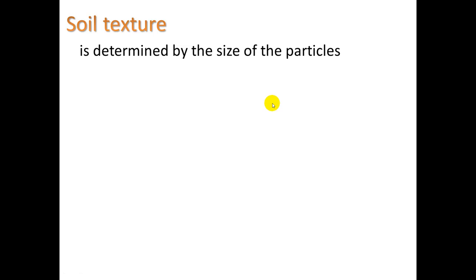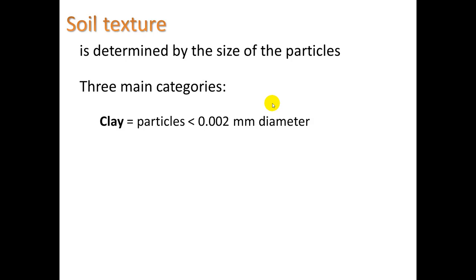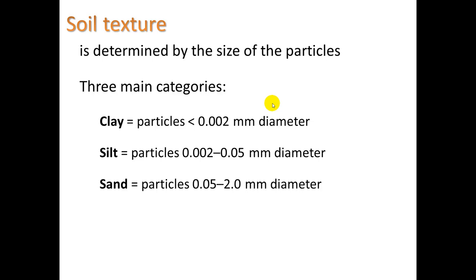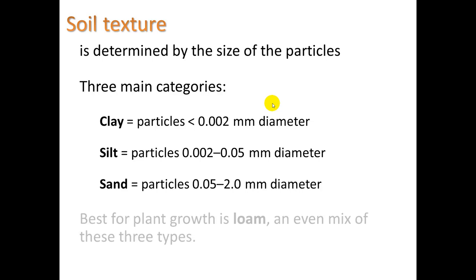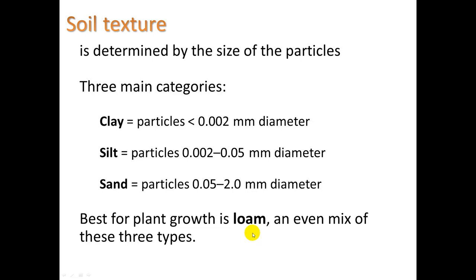Soil texture is determined by the size of the particles. There are three main categories of sizes. Clay: particles less than 0.002 millimeters in diameter — really, really small, microscopic. Silt: particles a little bit larger, up to 0.05 millimeters — still too small to see with the naked eye. Sand: particles that can be up to 2 millimeters in diameter, about the size of the lead tip of a pencil. The best for plant growth is loam soil, which is an even mix of these three types. We'll do soil texture determination in our lab next class period so you'll see how your soil is composed — whether it's mostly sand, mostly clay, mostly silt, or a nice mix of the three.